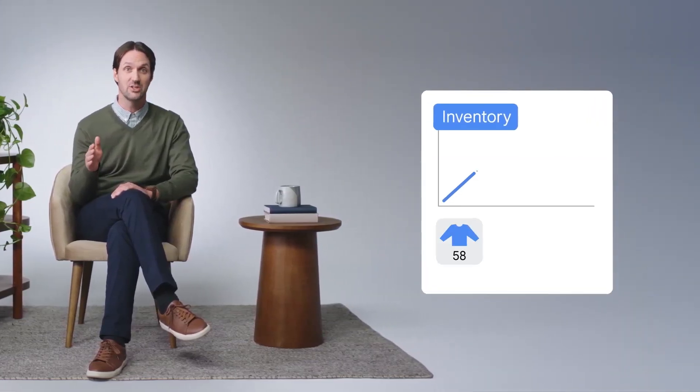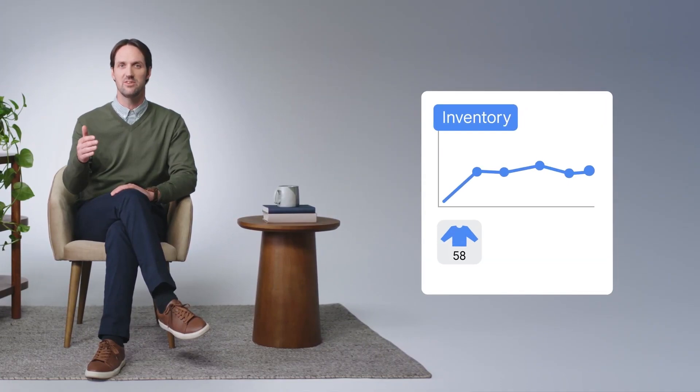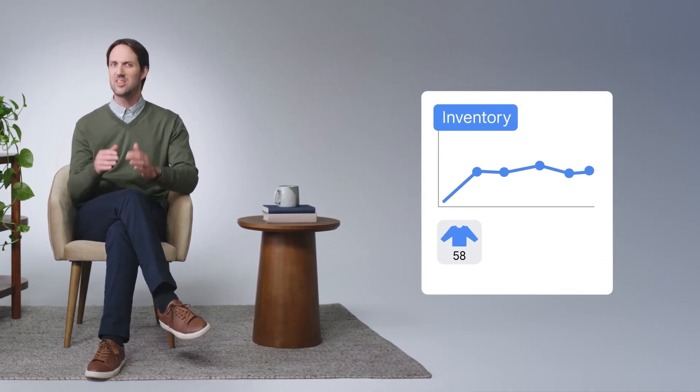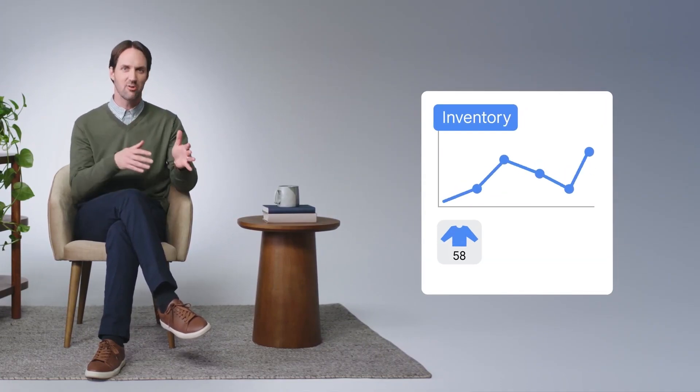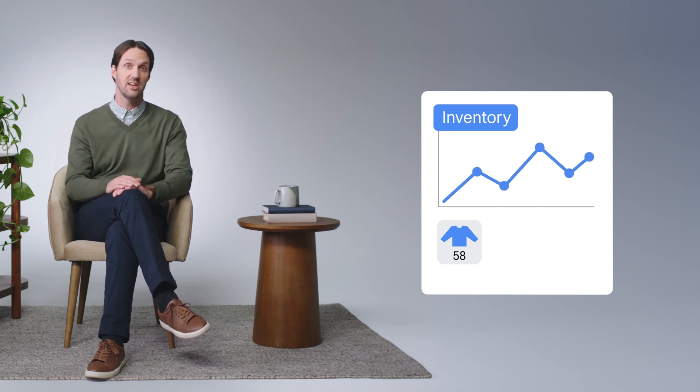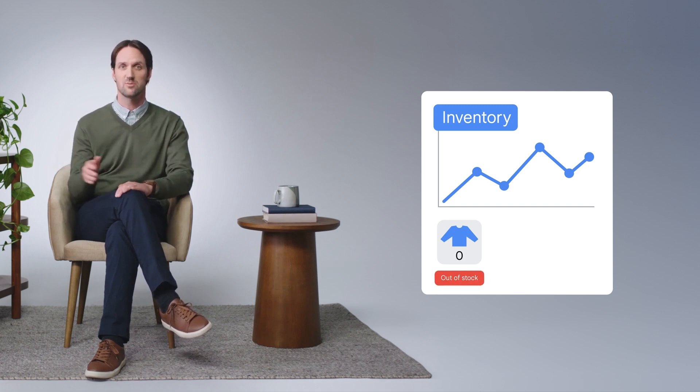For example, picture working at a retail company using an AI tool to forecast how much product inventory to order. If the AI tool produces inaccurate, outdated, or misinterpreted information, those hallucinations could lead the company to order the wrong amount of inventory, causing supply issues for customers.